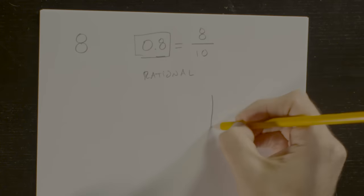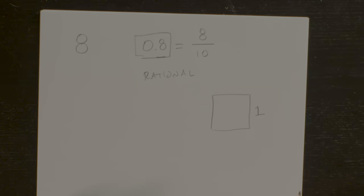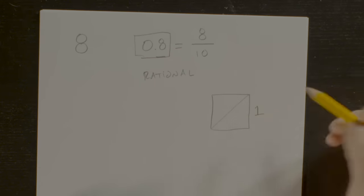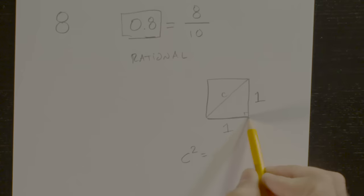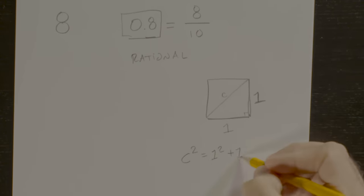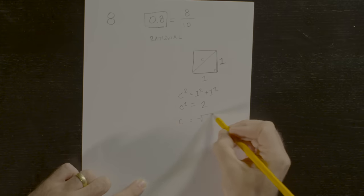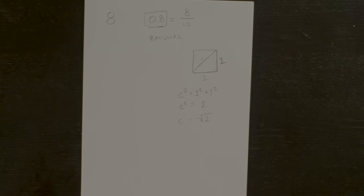For instance, think of a square with side length 1. Every side of this shape has a length of 1. What is the length of the diagonal? I'll call this line C. The Pythagorean Theorem tells us that C squared equals the length of this side squared plus the length of this other side squared. 1 squared plus 1 squared is just 2, so C squared equals 2, which means C equals the square root of 2. So the length of this diagonal is the square root of 2.